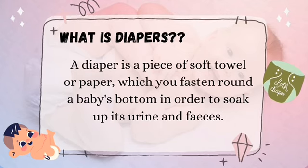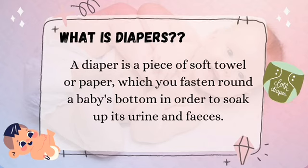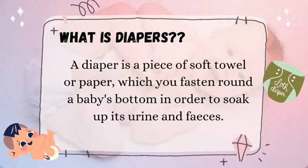What is diapers? A diaper is a piece of soft towel or paper which you fasten around a baby's bottom in order to soak up its urine and feces.